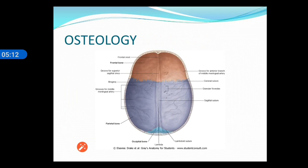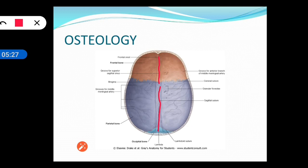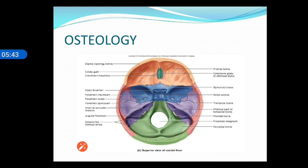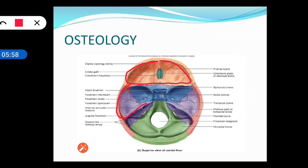We will see some osteological landmarks important for understanding the attachments of the dural folds. Looking at the inner aspect of the vault of the skull, there is a groove called the sagittal sulcus. The cranial cavity is divided into three compartments: the anterior cranial fossa, the middle cranial fossa, and the posterior cranial fossa.